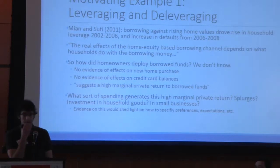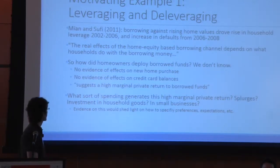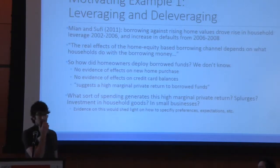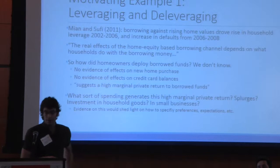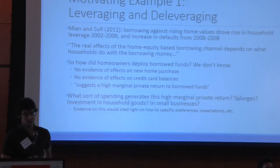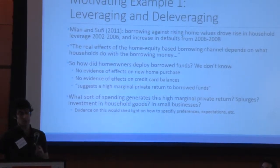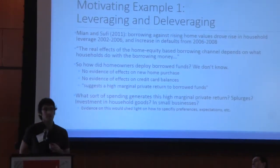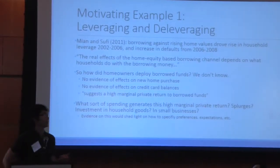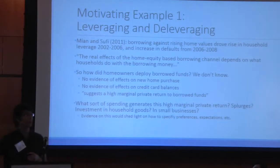Let me fix ideas by giving you a couple of examples. The first comes from one of Atif and Amir's papers — their 2011 paper identifies borrowing against rising home values drives an increase in household leverage and then a subsequent increase in defaults. They say the real effects of this home equity-based borrowing are going to depend on what households do with the borrowed money. The data they have can rule out certain types of loan uses, but they can't identify where the money goes or what it's spent on — it doesn't seem to be spent on new home purchases or bringing down credit card balances.